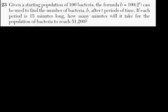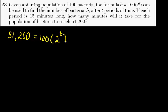We're basically looking for how many minutes it will take for the population to reach this number. B is the population number, so we start by writing 51,200 equals 100 times 2 to the t.